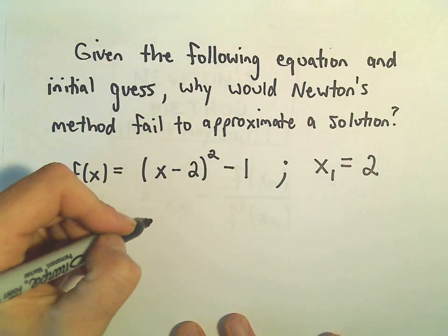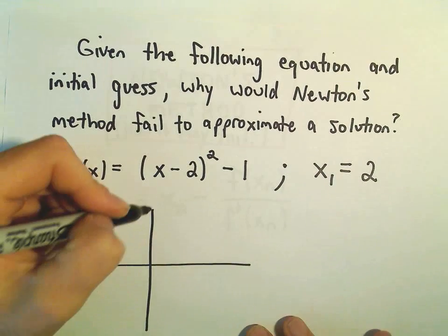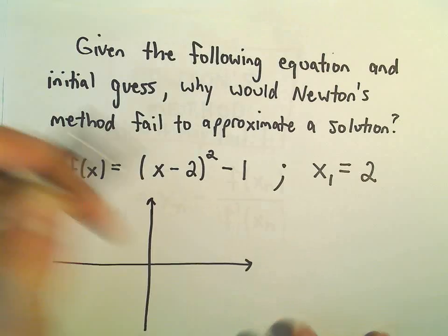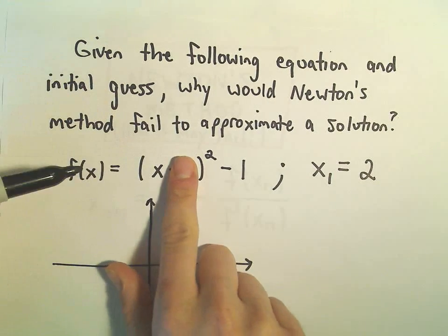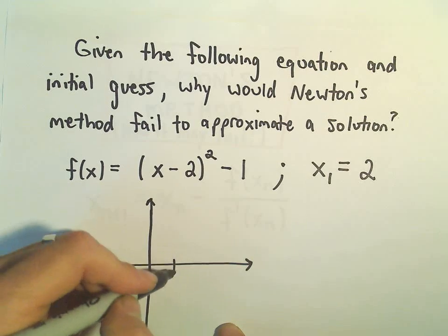So what's the issue? Why would x equals 2 be bad here? I'm just going to graph this function real quick. Remember, x squared is a parabola. x minus 2 on the inside actually shifts it 2 to the right.